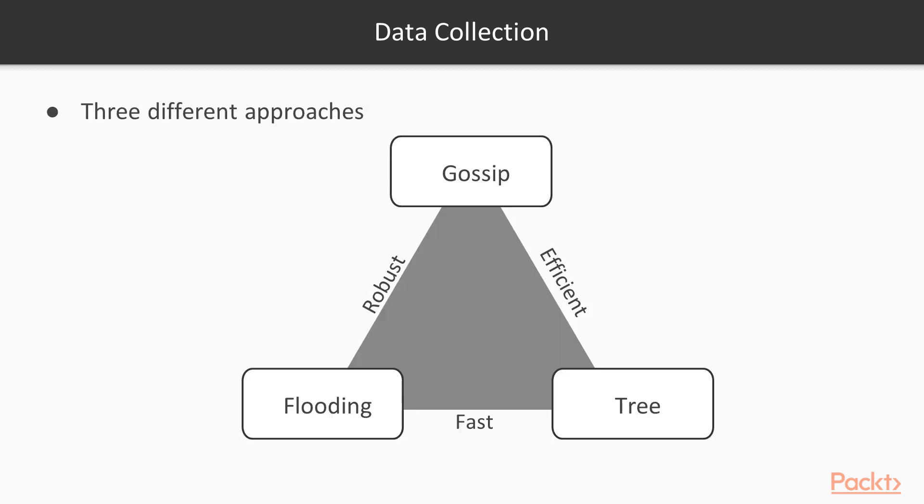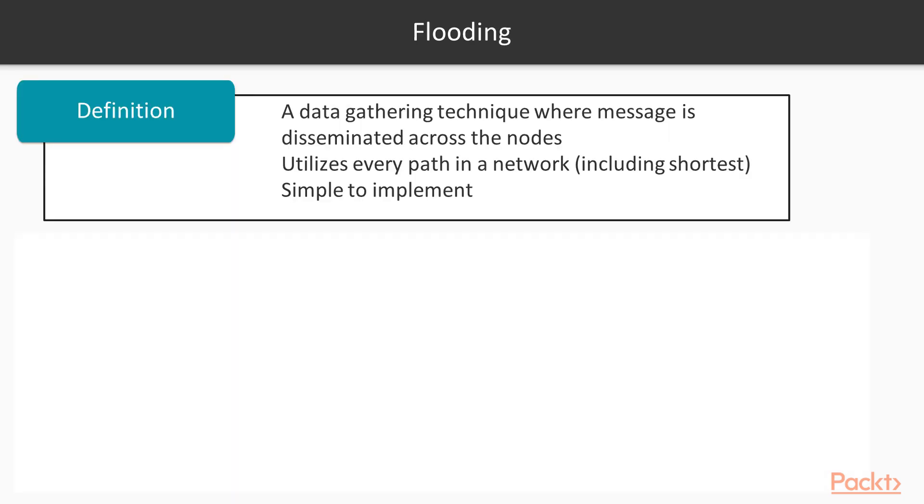There are three types of data collection approaches: gossip, tree-based, and flooding. I've constructed it in a triangle to define the properties of each, so let us look at flooding first. In the data flooding technique, the word flooding is taken literally. Data is simply floated into the network, which as a result utilizes every path in a network, including the shortest. It is indeed quite simple to implement.